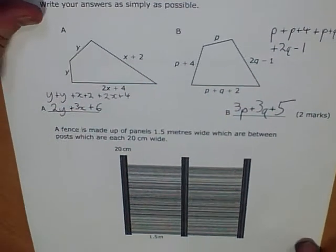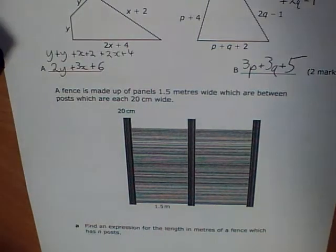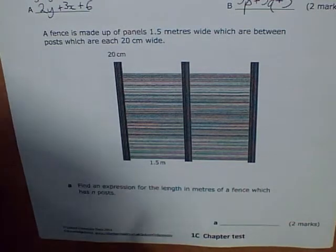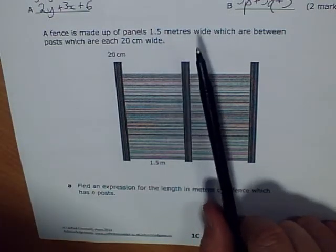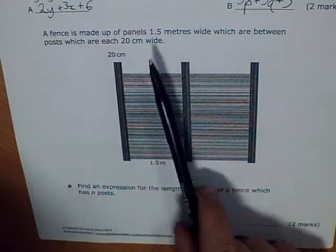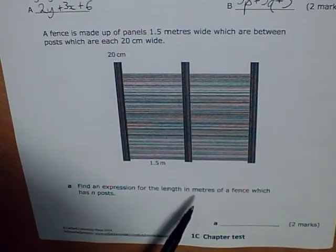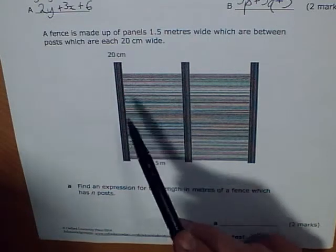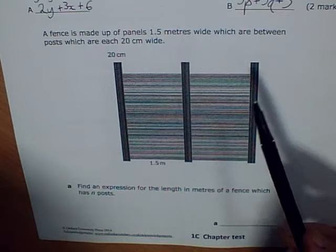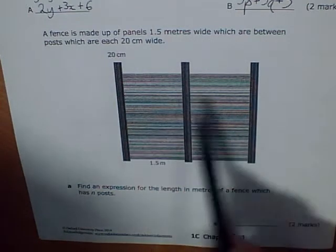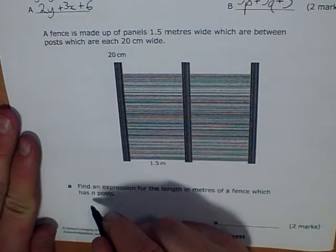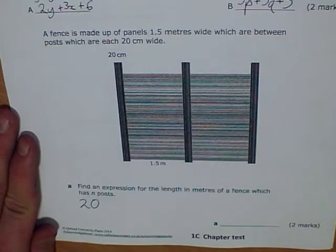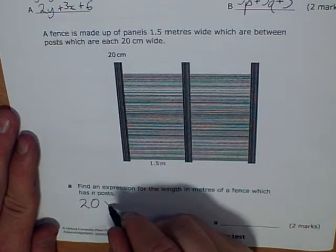Question 2. This people found very tricky, and I think it's because it's very much a problem solving type of question. I'll try to go through it nice and slowly. A fence is made up of panels 1.5 metres wide, which are between posts which are each 20 centimetres wide. Write an expression for the length in metres of a fence which has n posts.